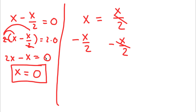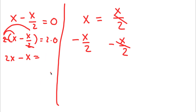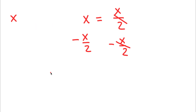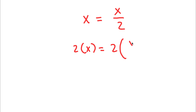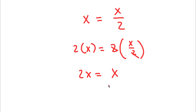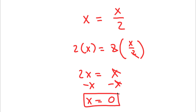Another way of solving this problem: instead of subtracting x over 2 on both sides, I can simply multiply by 2 straight away. So 2 times x equals 2 times x over 2. Now 2 times x is 2x, and 2 times x over 2, the 2s cancel, leaving just x. If I subtract x on both sides, x minus x cancels and 2x minus x is x, so x is equal to 0. That's another way of solving this problem.